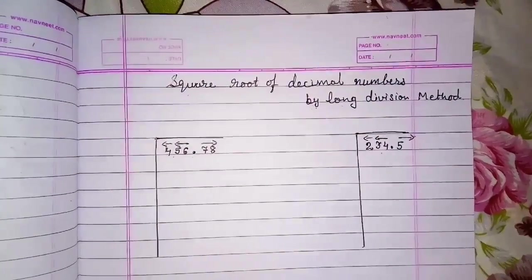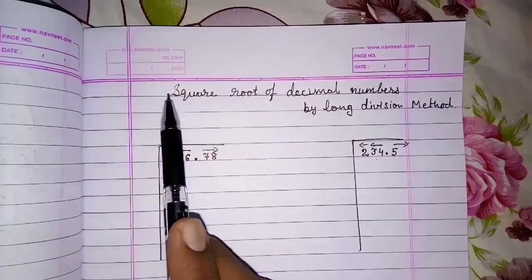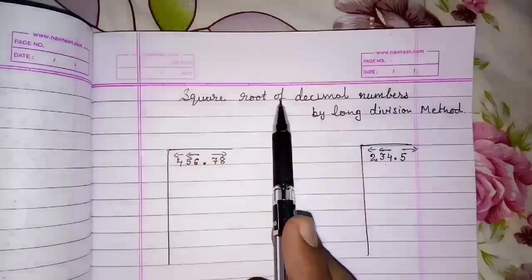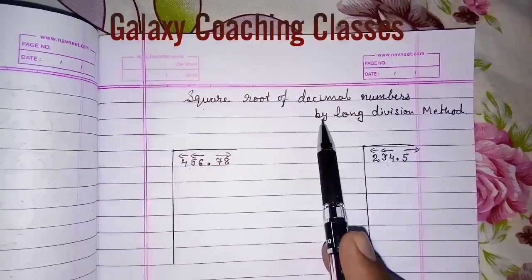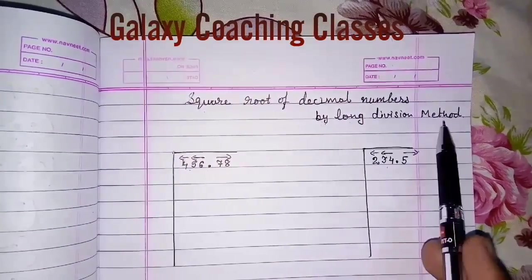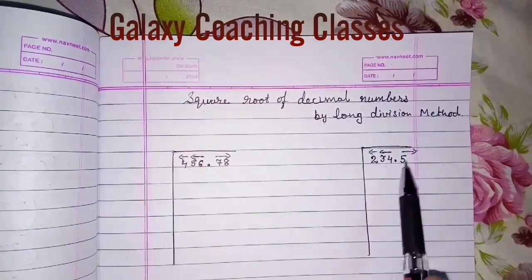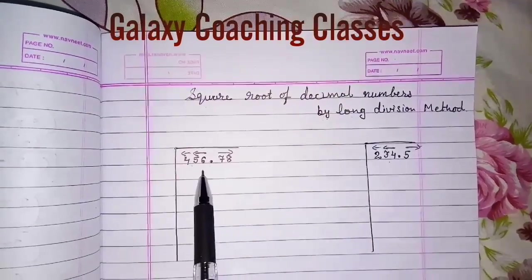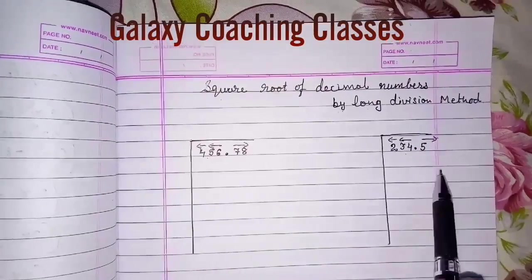Hello friends, today we are going to study how to find square root of decimal numbers by long division method. Look here, there are two decimal numbers and we are going to find the roots of these two numbers.